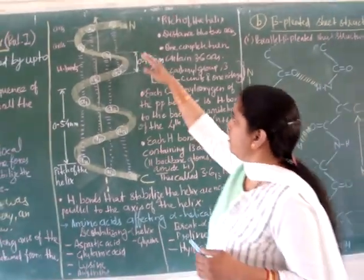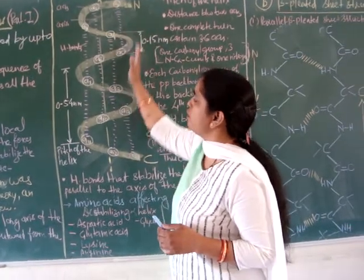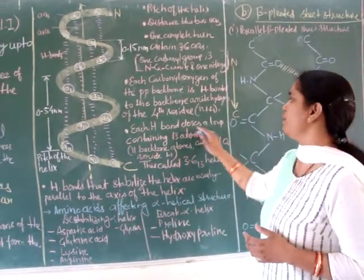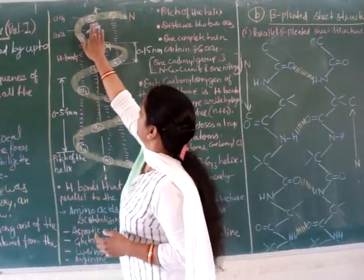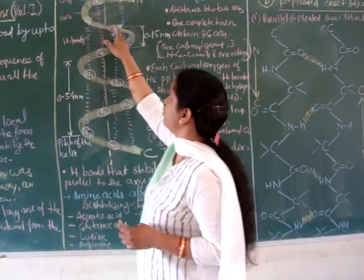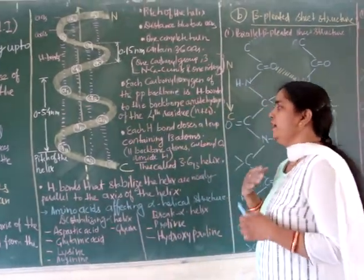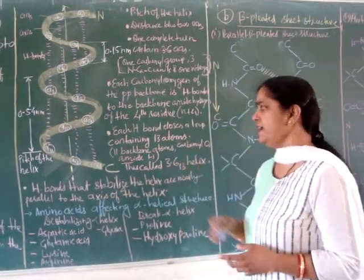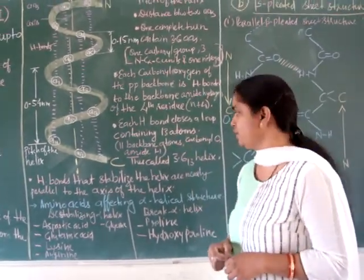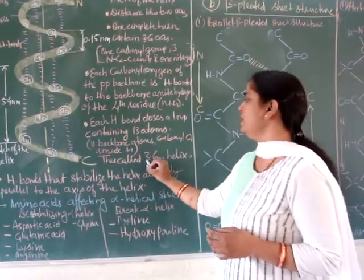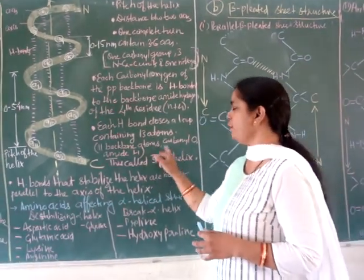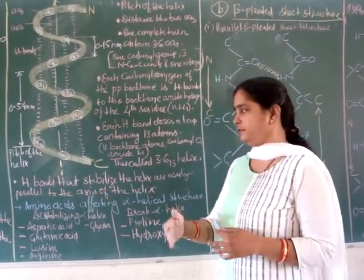These hydrogen bonds are parallel to the axis. Each hydrogen bond closes a loop — for example, the hydrogen bond between A1 and A5 forms a closed loop structure. This closed loop contains 13 atoms: 11 backbone atoms, plus one carbonyl oxygen and one amide hydrogen. That is why the alpha helix is called a 3.6₁₃ helix — 13 atoms in a closed hydrogen-bonded loop and 3.6 amino acids per turn.